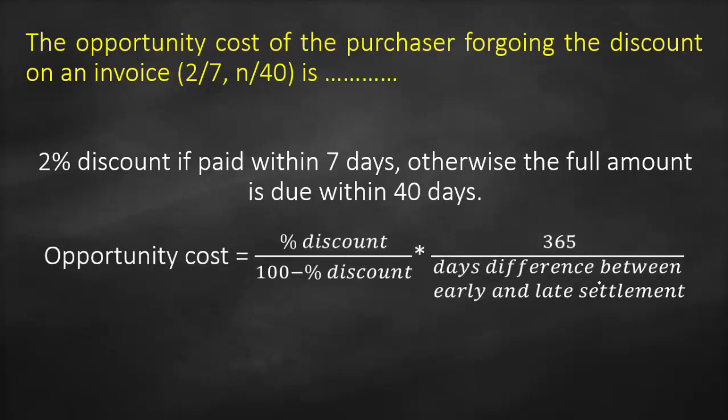The opportunity cost formula is: the percentage of discount divided by (100 minus the percentage of discount), all multiplied by the number of days in a year — 365 — divided by the days difference between early and late settlement.